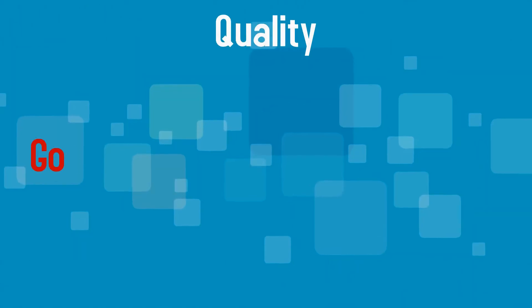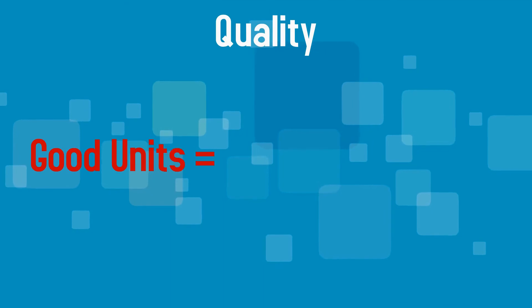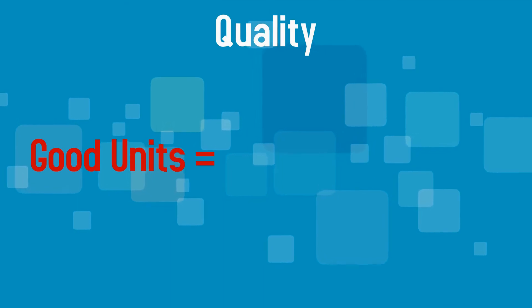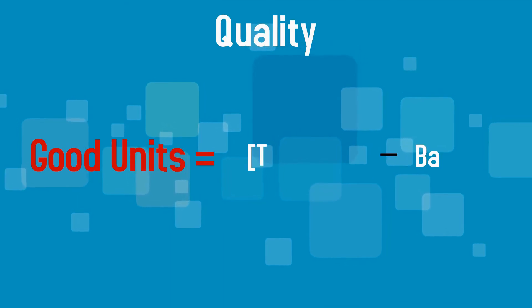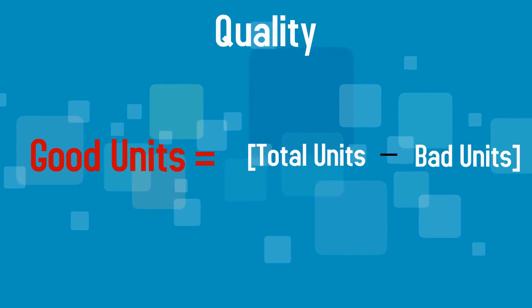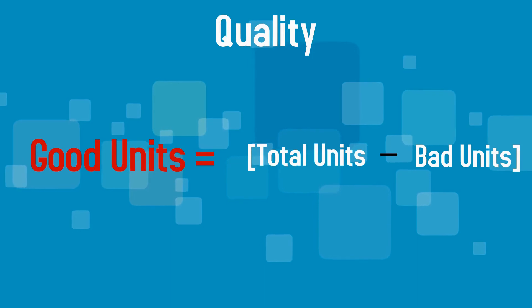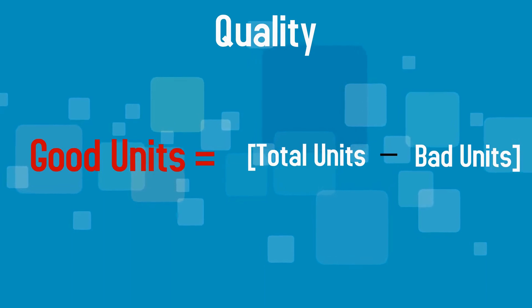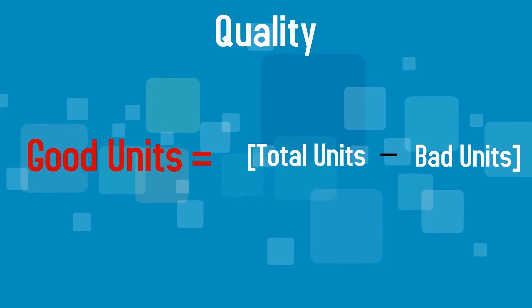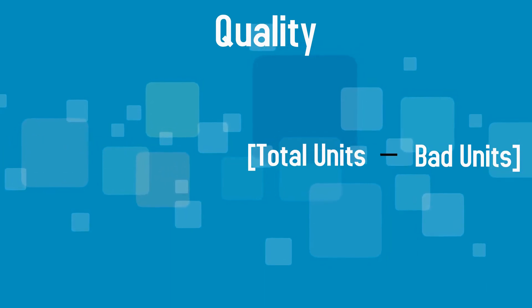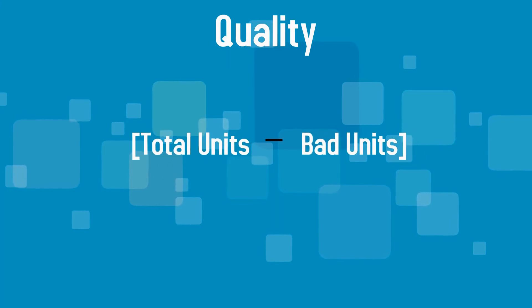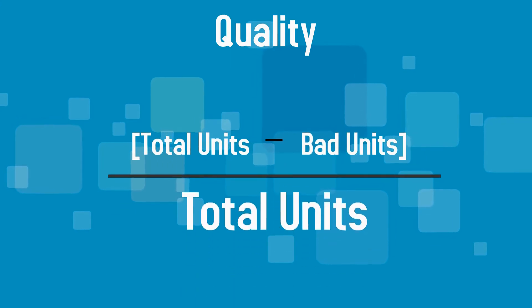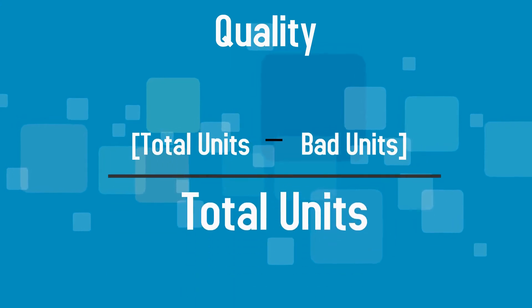The quality factor is calculated by first solving the total number of good units produced. This is done by subtracting the number of bad units from the total number of units produced, and then dividing the number of good units by the number of total units produced.